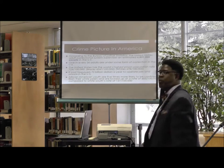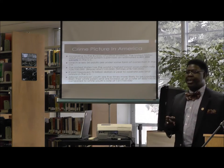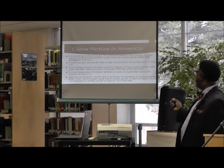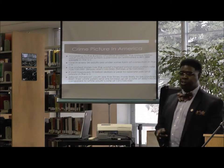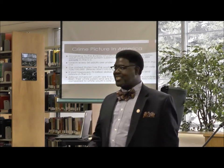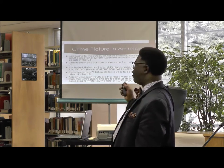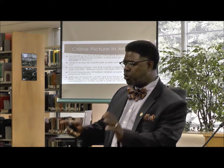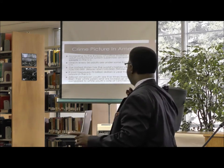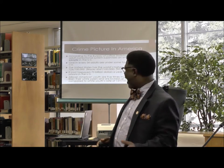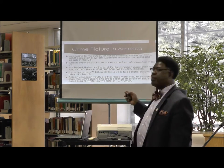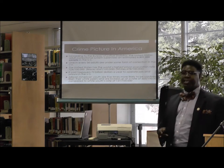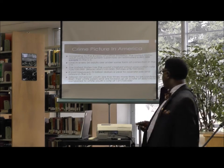Before we talk about the three variables, let's look at the crime picture in the United States. Right now, according to the Bureau of Justice Statistics, we have 6,851,000 people who are under some form of adult correctional supervision in the United States. As a matter of fact, one in every 36 adults in the United States are under some form of correctional supervision.